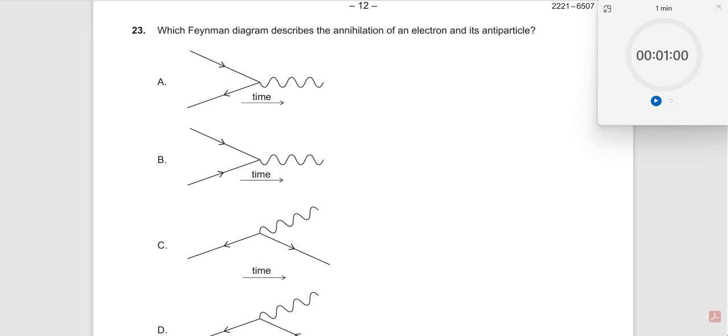Okay, question number 23. Which Feynman diagram describes the annihilation of an electron and its antiparticle? So what does this tell you? It describes the annihilation of an electron and its antiparticle, so you should have one electron and an antiparticle.